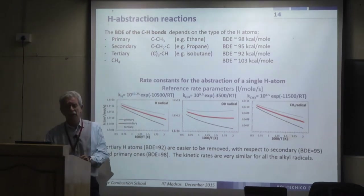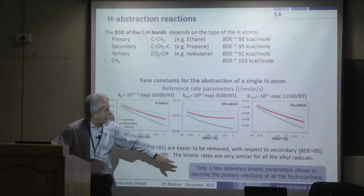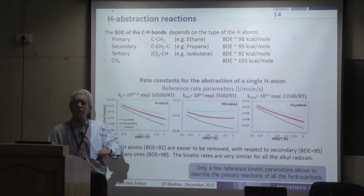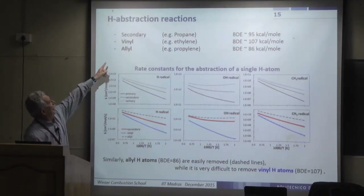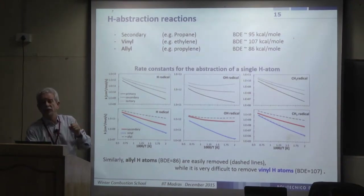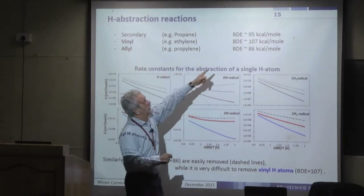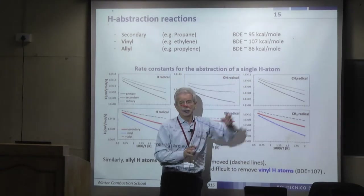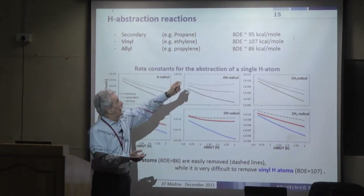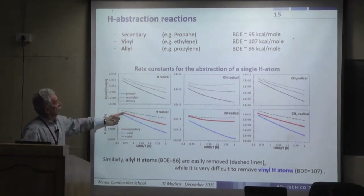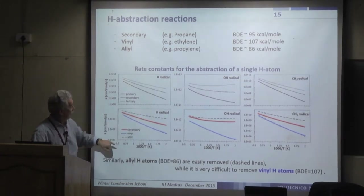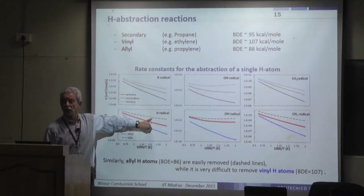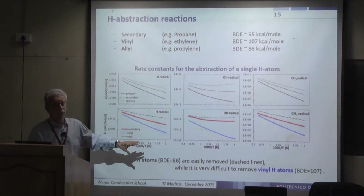Only a few reference kinetic parameters are needed to develop a large kinetic scheme. For vinyl and allyl hydrogens: abstraction from ethylene is very difficult because the C–H bond exceeds 100 kcal/mol, while in propylene, due to allyl radical formation, the bond dissociation energy is only 86 kcal/mol. Abstracting an allylic hydrogen is partially as easy as abstracting a tertiary one.